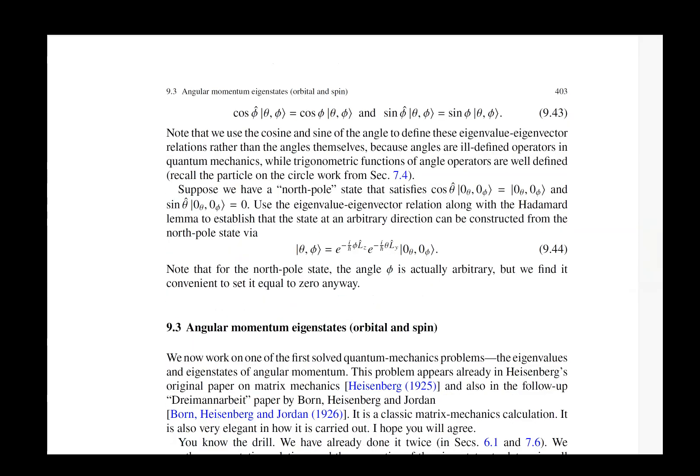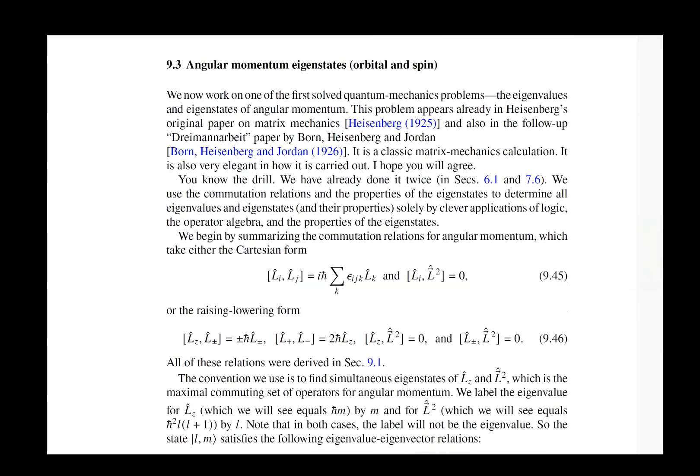Then our next subsection is looking at the states that have definite angular momentum because the square of angular momentum commutes with each of its components but the components don't commute with themselves we can find states that have a definite L squared value and have a definite value of LZ. We could have also picked LX or LY but it's traditional to pick LZ as the one that we're going to work with.